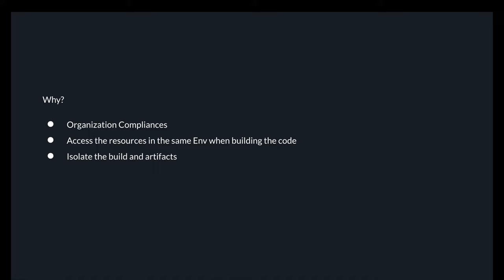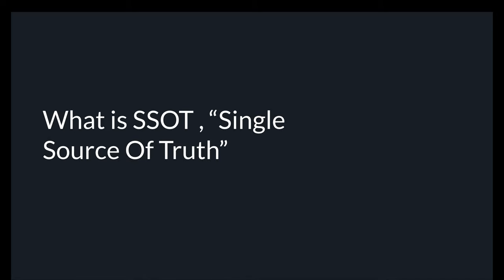We should still be able to rectify these bottlenecks while complying with these requirements, and proceed with our CI/CD pipeline. The SSOT — single source of truth — is critical. When you have a source code repository, you must ensure there is one SSOT. You cannot have one change in the production source code and a different change in the developer source code; it should always be the same.